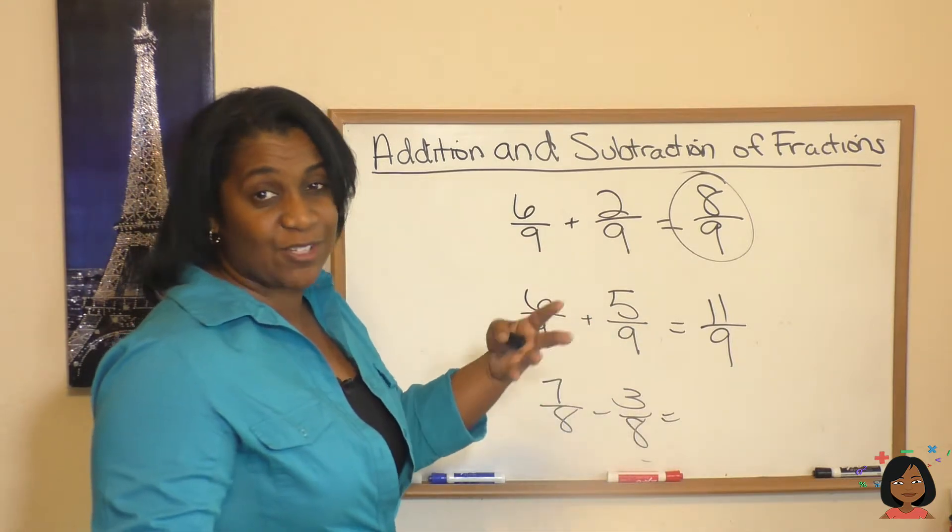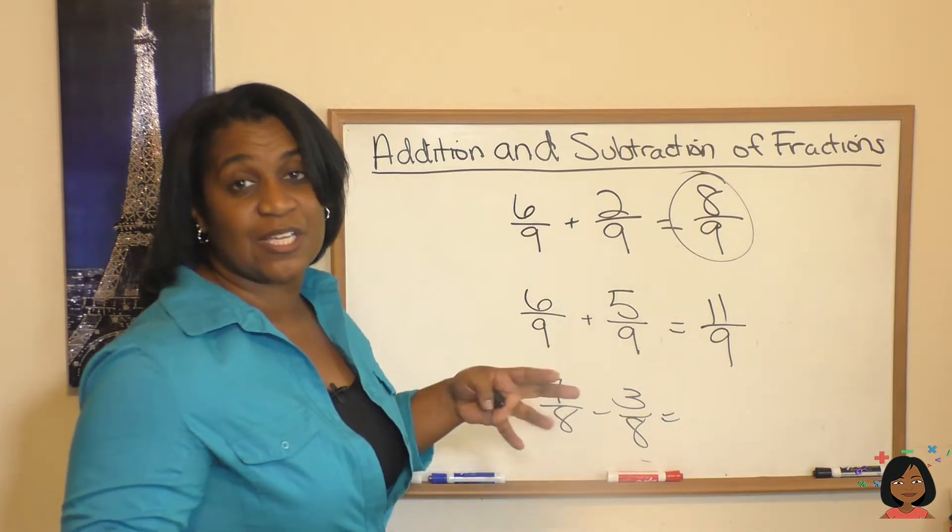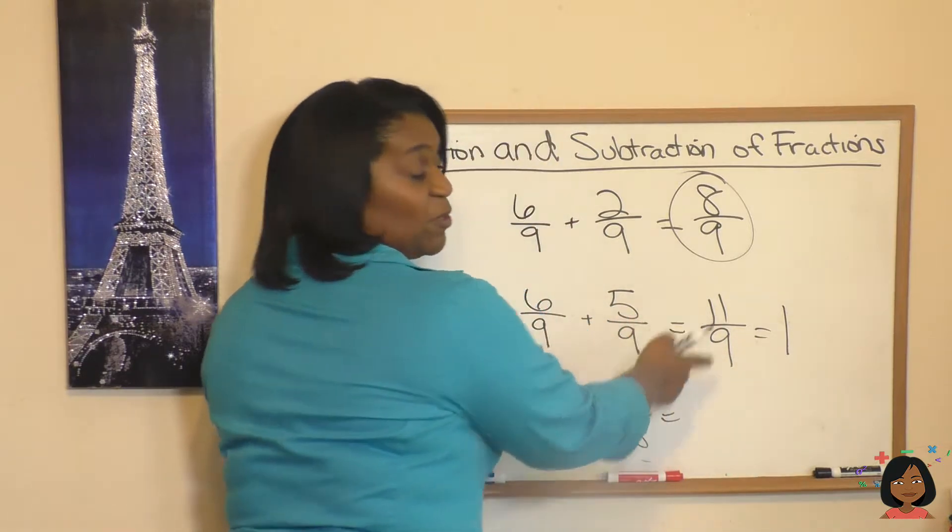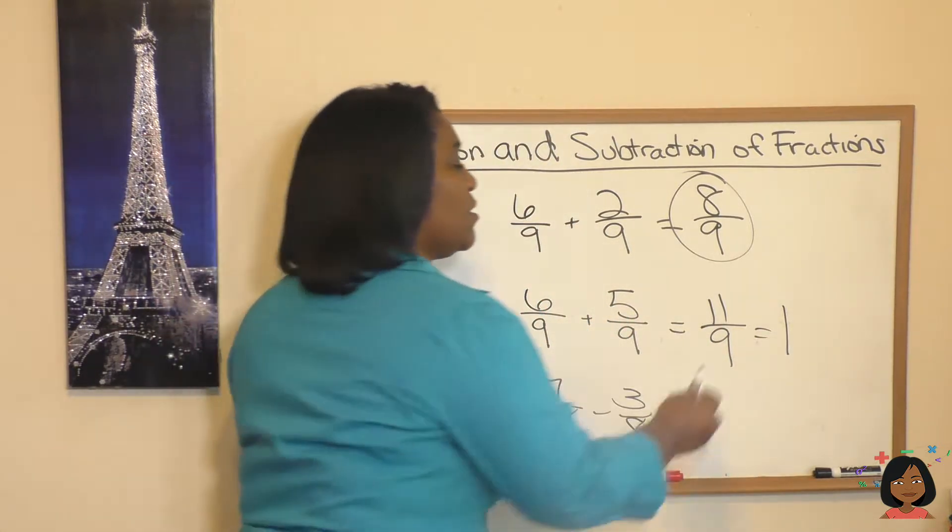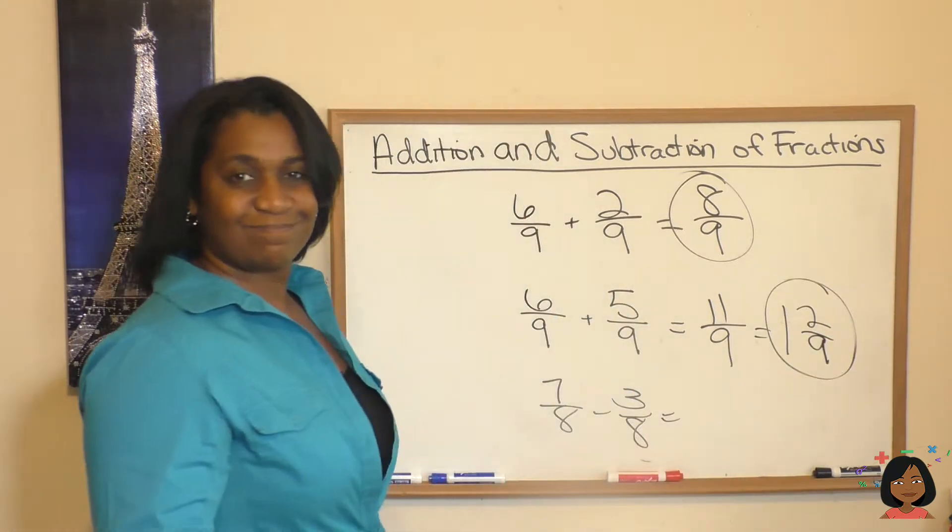And we don't keep improper fractions improper unless we are told to. So for the most part, we're going to change this into a mixed number, which is going to be 1. And the difference between 11 and 9 is 2. So it's 1 and 2 ninths is your answer.